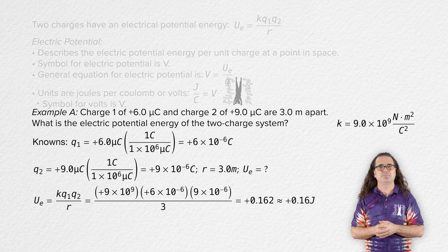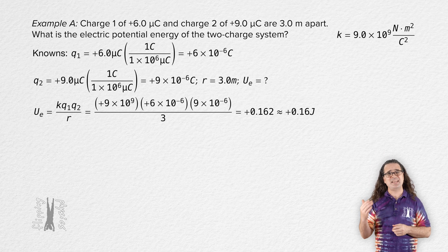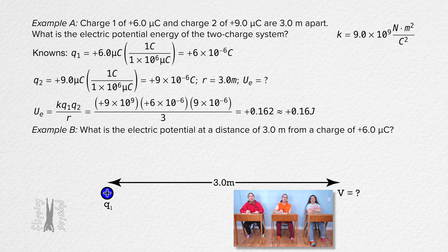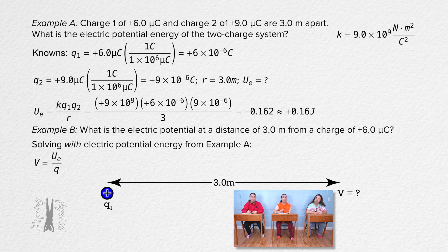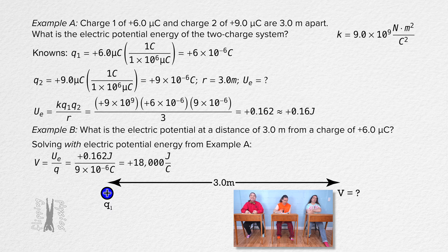Now, Bobby, please read and solve the next example. What is the electric potential at a distance of 3.0 meters from a charge of positive 6.0 microcoulombs? Bo already identified a bunch of knowns, so I'm not going to repeat those. Mr. P, you told us electric potential equals electric potential energy over charge, so all we have to do is divide 0.162 joules by 9 times 10 to the negative 6 coulombs, and we get 18,000 joules per coulomb, or 18,000 volts.